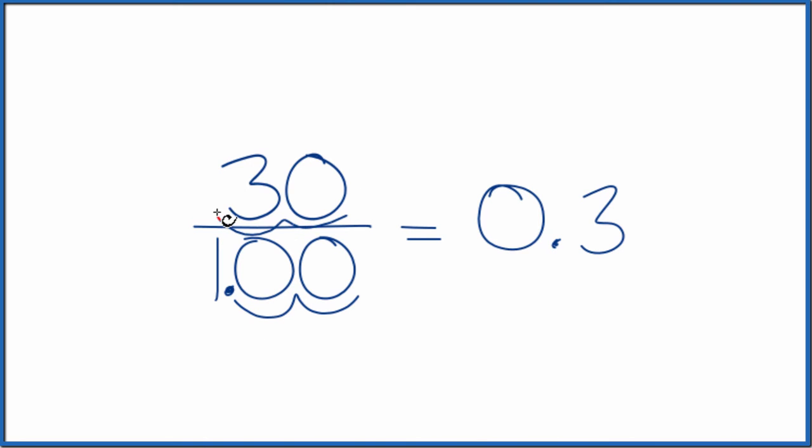So we go one, two, and now we have 0.30 over one, which is just 0.30 since we're dividing by one.